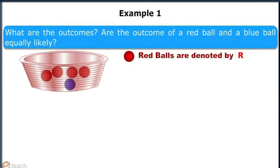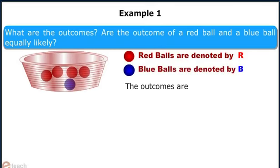Red balls are denoted by R and blue balls are denoted by B. The outcomes are R1, R2, R3, R4, and B. So the total number of outcomes equals 5.